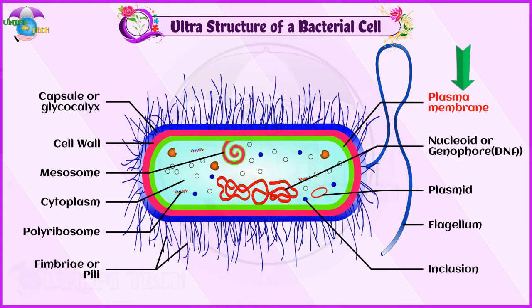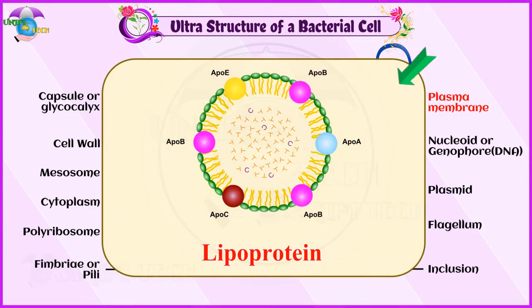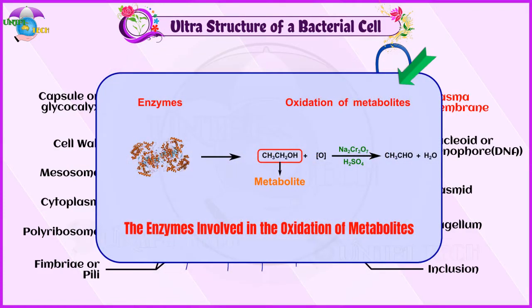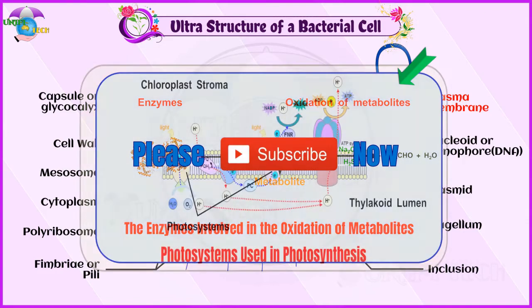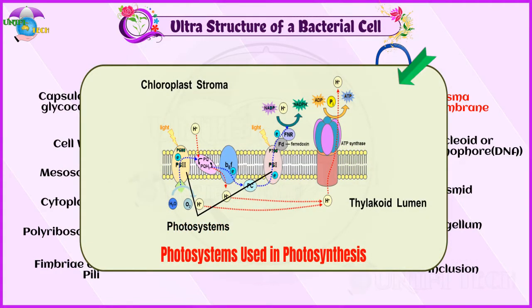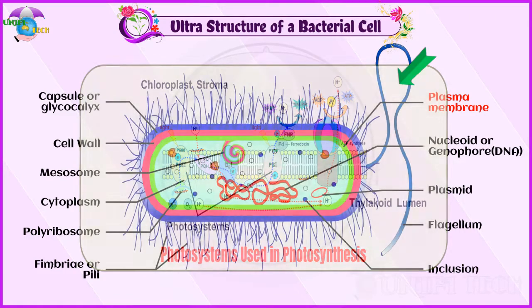Plasma membrane: The plasma membrane is made up of lipoprotein. It controls the entry and exit of small molecules and ions. The enzymes involved in the oxidation of metabolites as well as the photosystems used in photosynthesis are present in the plasma membrane.